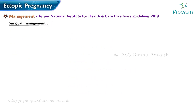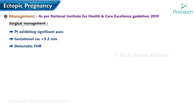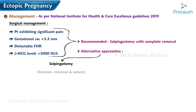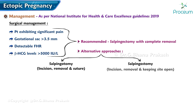Surgical management is preferred if the patient exhibits significant pain along with a gestational sac exceeding 3.5 cm, a detectable fetal heart rate, and beta-hCG levels greater than 5,000 IU/L. The recommended course is salpingectomy with complete removal. Alternatives include salpingotomy — incision, removal, and suture — or salpingostomy — incision, removal, and keeping the site open.